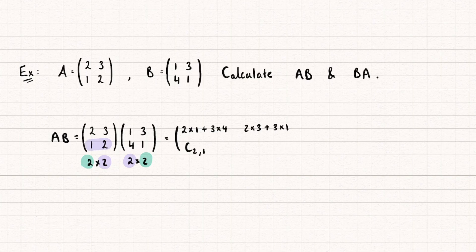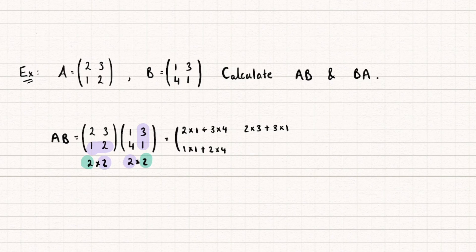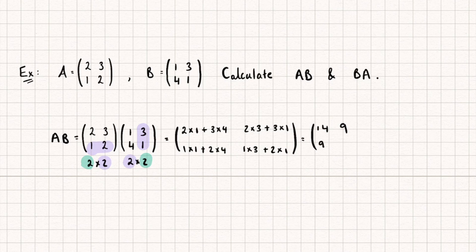So we're going to do 1 multiplied by 1 plus 2 multiplied by 4. And then finally, to get the bottom right element — the one in the second row, second column — I'm going to take the second row of the first matrix and multiply it by the second column of the second one. So we do 1 multiplied by 3 plus 2 multiplied by 1. This gives us the resulting matrix: 2 plus 12 is 14; 6 plus 3 is 9; 1 plus 8 is 9; and 3 plus 2 is 5.